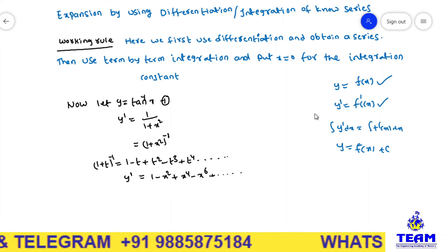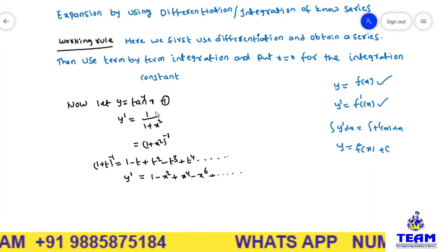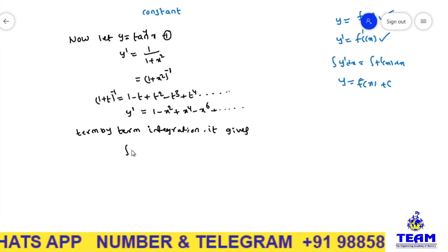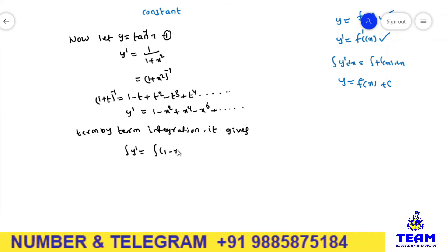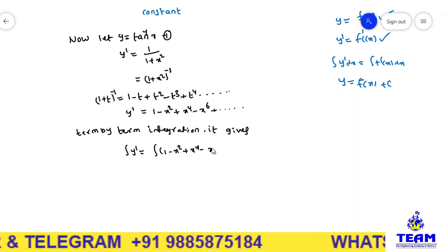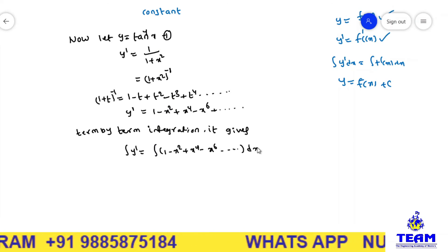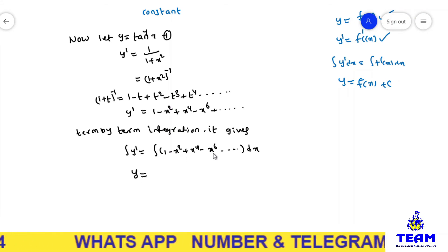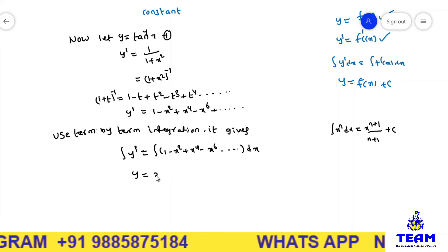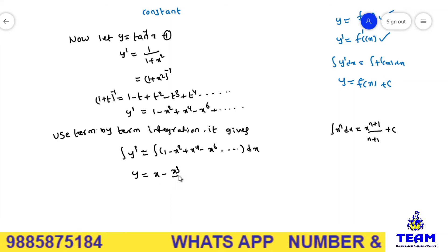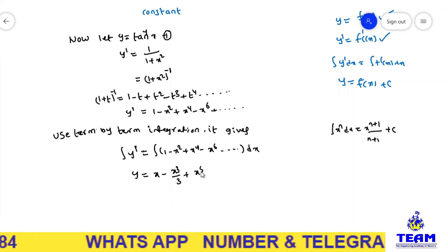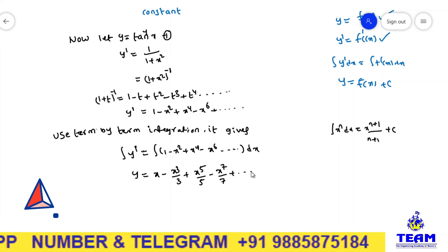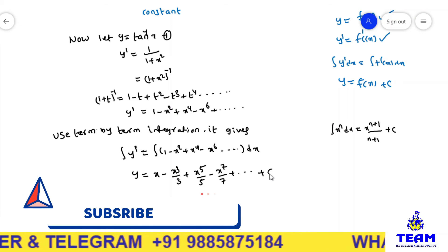Now, we have differentiated and obtained a series. But we want the expansion of y itself. So we use term-by-term integration. The integral of y dash equals the integral of 1 minus x squared plus x to the power of 4 minus x to the power of 6 and so on, dx. The integration and derivative cancel, giving y equal to x minus x cubed by 3 plus x to the power of 5 by 5 minus x to the power of 7 by 7 plus so on, plus constant c.